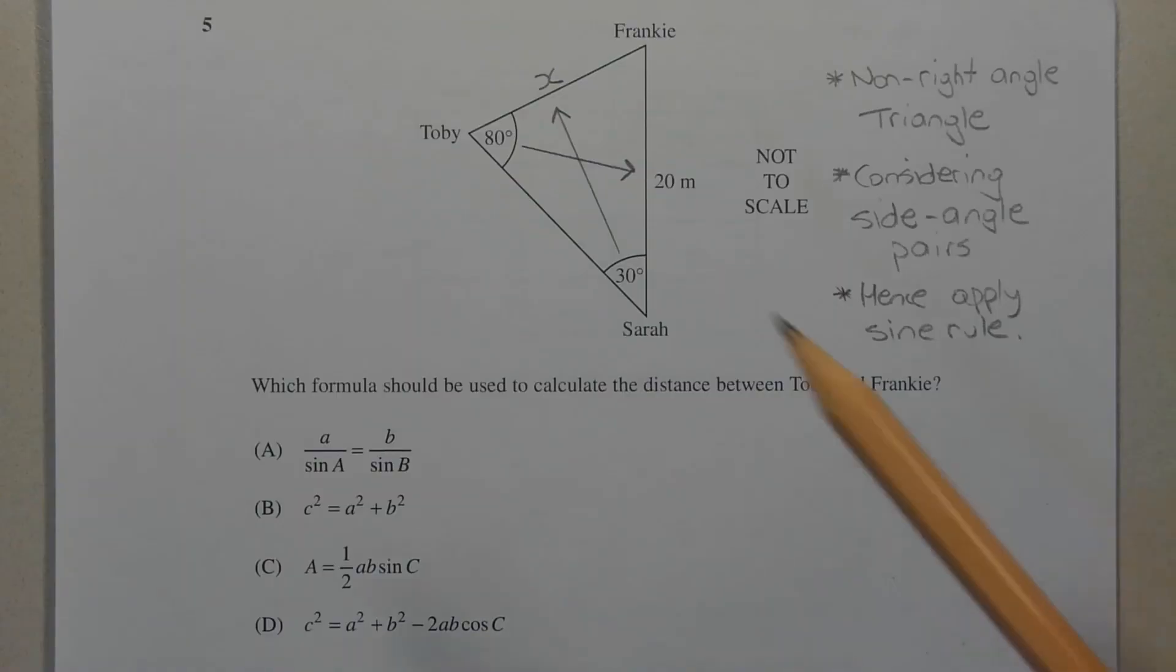The first thing to note is that the diagram is of a non-right angle triangle, which means either applying the sine rule, the cosine rule, or the area rule for triangles, that is half AB sine C.